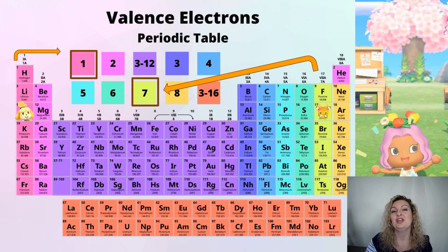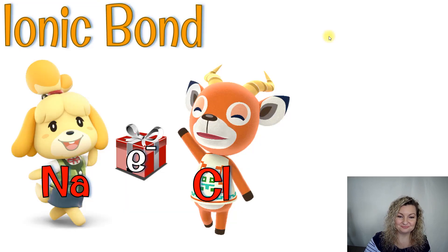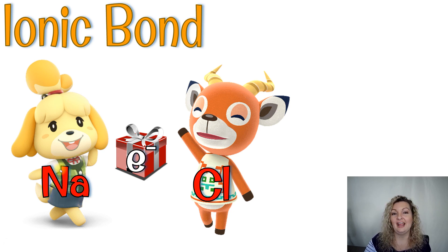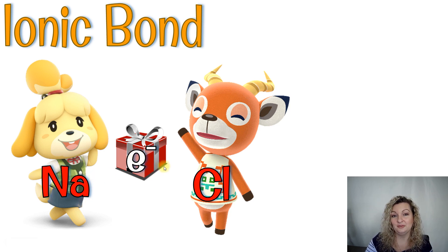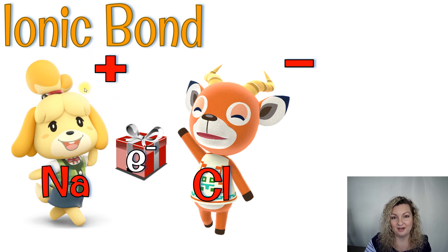Neither one has eight, but when they come together, seven plus one equals eight. So this is really like a match made in Animal Crossing heaven. So what they're going to do is sodium is going to give that extra valence electron it has, because it only has one. It's going to gift that one to chlorine — here you go, chlorine, have this one negative electron. And chlorine is going to have a full outer shell of eight, and it's going to be completely happy and love this gift. So that makes sodium positive now by one, because it just gave away a negative.